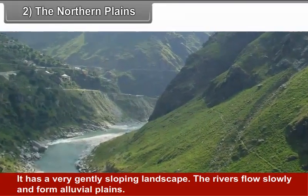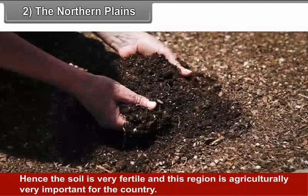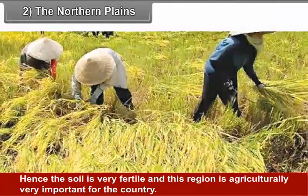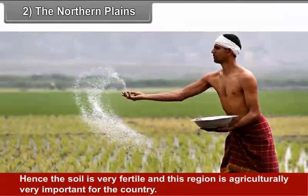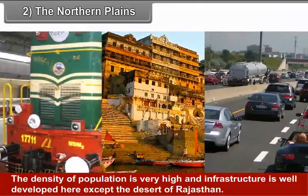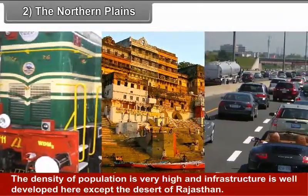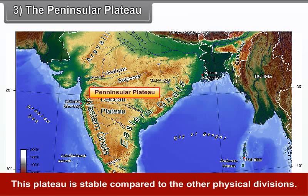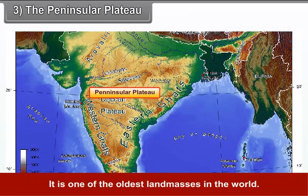The Northern Plains form an unbroken belt of alluvial soil which increases in thickness from west to east. It has a very gently sloping landscape. The rivers flow slowly and form alluvial plains; hence the soil is very fertile and this region is agriculturally very important. The density of population is very high and infrastructure is well developed here, except in the desert of Rajasthan.